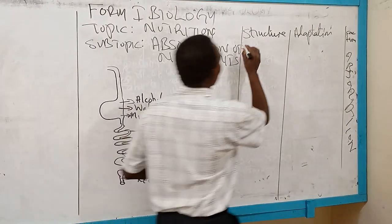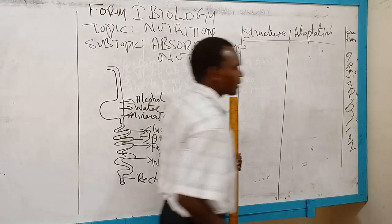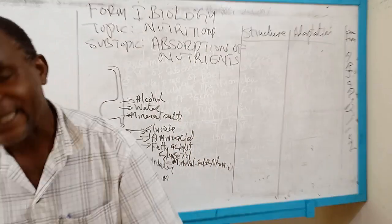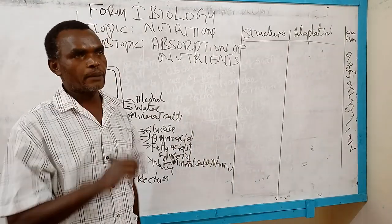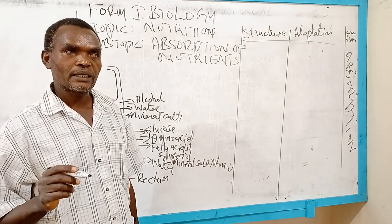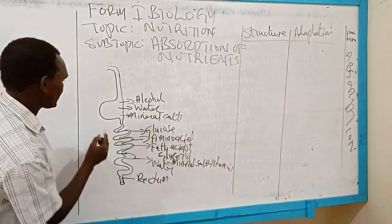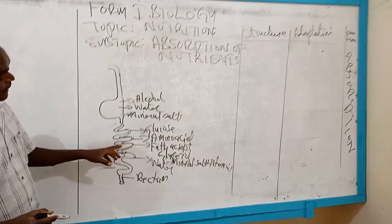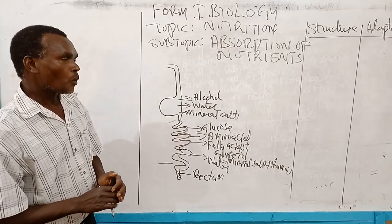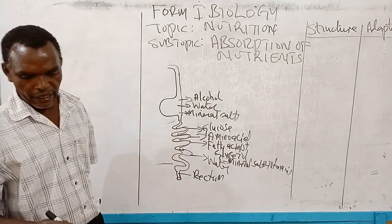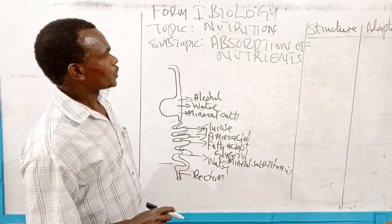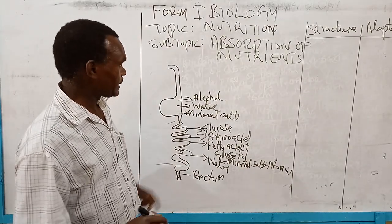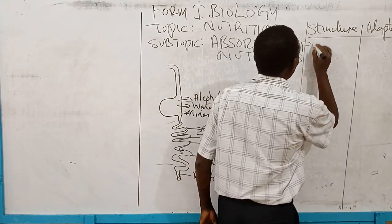The part of the alimentary canal that is best made for absorption is none other than the ileum. So, what are the adaptations of the ileum? Adaptation number one is length.